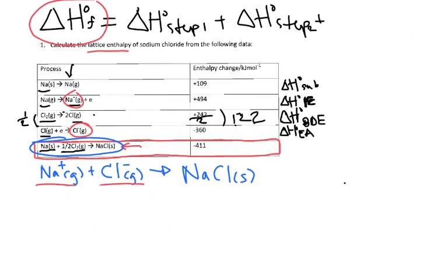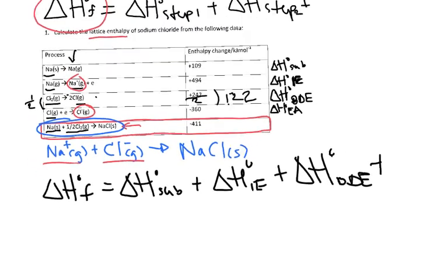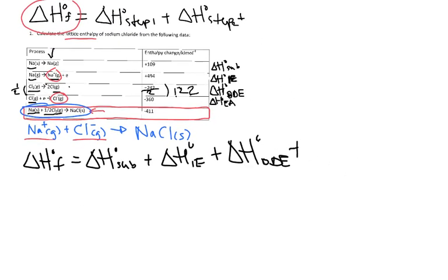So now we can solve our problem. The delta H of formation is equal to the delta H of sublimation plus the delta H of ionization energy plus the delta H of bond dissociation energy plus the delta H of electron affinity.